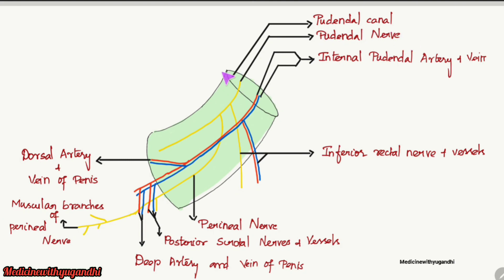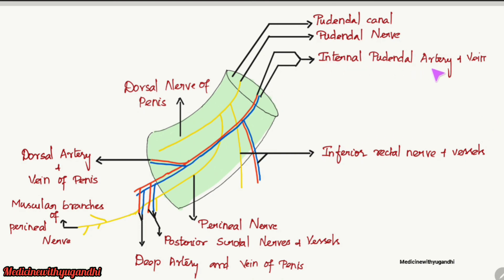On the posterior part of the pudendal canal, the pudendal nerve gives a branch called the inferior rectal nerve, and the internal pudendal artery gives rise to the inferior rectal artery. The pudendal nerve then gives two terminal branches: the dorsal nerve of the penis and the perineal nerve, which supplies muscular branches to the perineal muscles and gives posterior scrotal or posterior labial nerves. The internal pudendal artery divides into the dorsal artery of the penis, the perineal artery giving posterior scrotal arteries, and the deep artery of the penis.